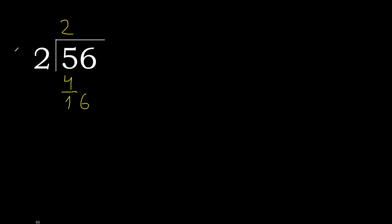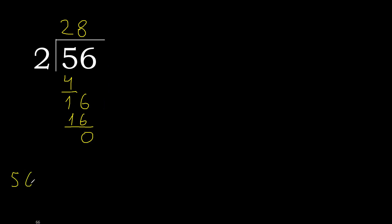16. 2 multiplied by 9 is greater, so multiplied by 8: 2 times 8 is 16. 16 minus 16 is 0. There is no remaining number, so we finish. 56 divided by 2 is 28.